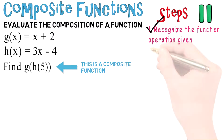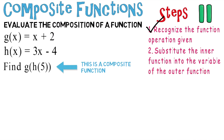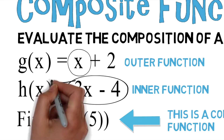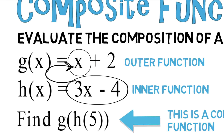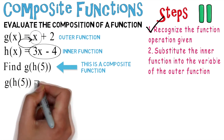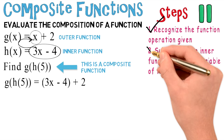Moving on to the second step, which is to substitute the inner function into the variable of the outer function. So what does that mean? Let's identify the inner function and identify the outer function. The inner function is 3x minus 4, and we're going to plug 3x minus 4 into the x. So take that 3x minus 4 and plug it in for the x. You wind up getting G of H of 5 equals 3x minus 4 plus 2. So now we can check off the second step.